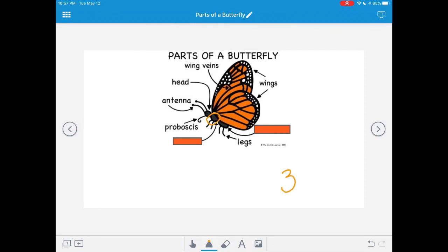Do you remember what the middle section's called? I'll give you a hint. It starts with the sound th. It's the thorax. Can you say thorax? The thorax is where the legs are attached. It also contains the muscles that the butterfly needs to flap its wings. Let's say thorax one more time. Thorax.